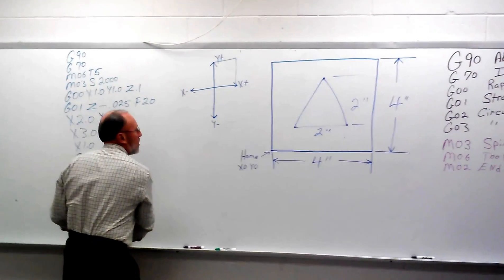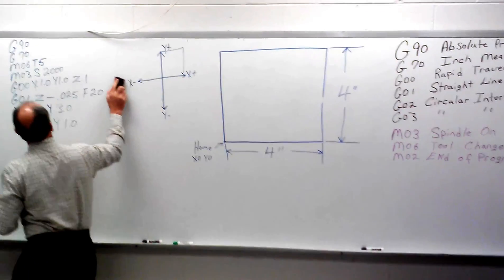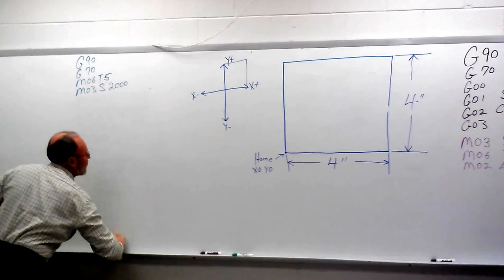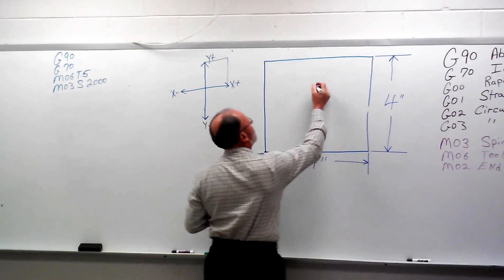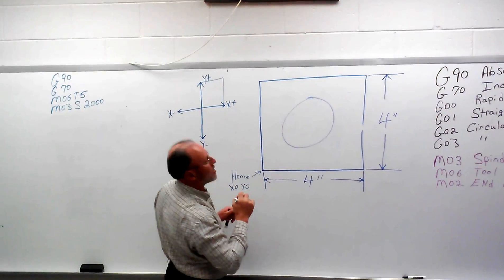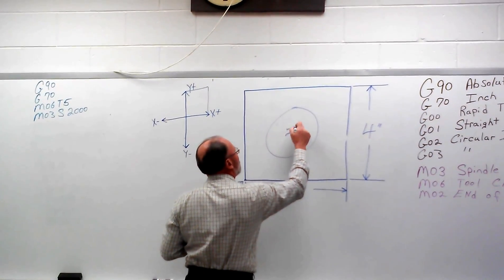One last one to do, and that will be a circular command. We're going to do a 2 inch circle in this one. That's supposed to be a circle, it looks like an egg, but it's supposed to be a circle. That's going to be a 2 inch diameter circle.